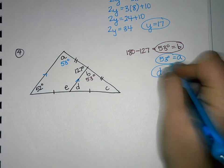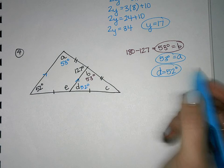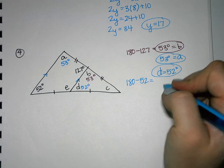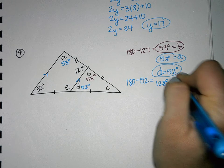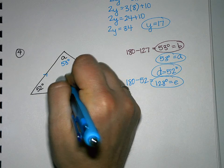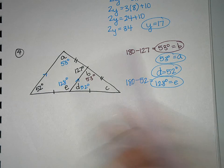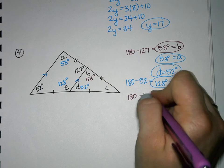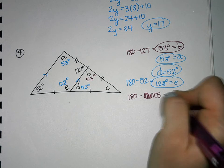And then how could we find E? 180 minus 52, and that would give us 128. So E would equal 128. And then how can we find C? If we add 52 and 53, that's 105. So that would give us 75 degrees. So that would be C.